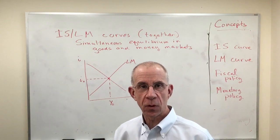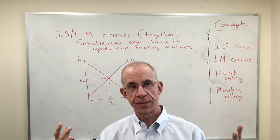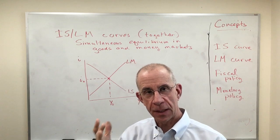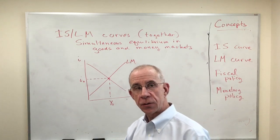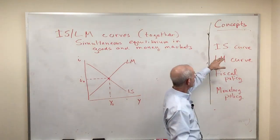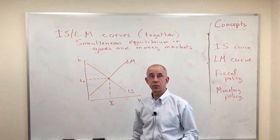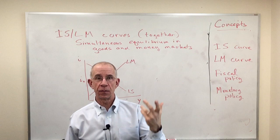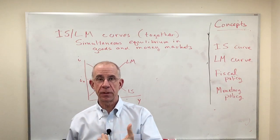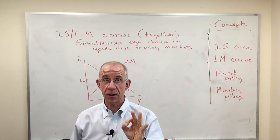Let's put the IS and the LM curve relationships together in the same graph. In a separate video, I talked to you about the goods market equilibrium as represented by the IS curve, this combination of interest rates and output such that the goods market is in equilibrium.